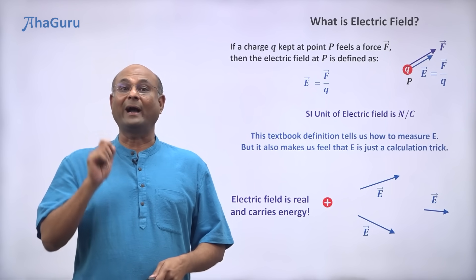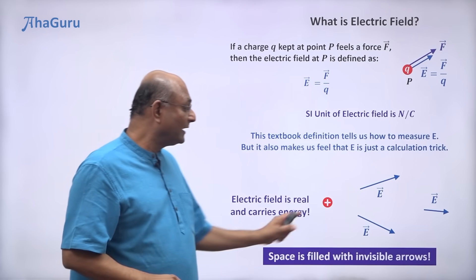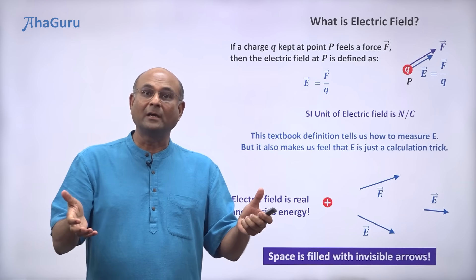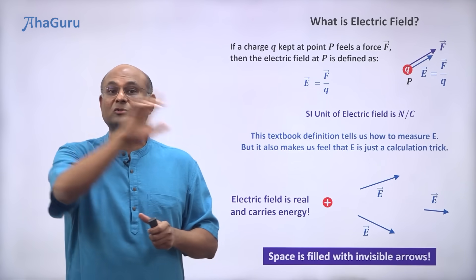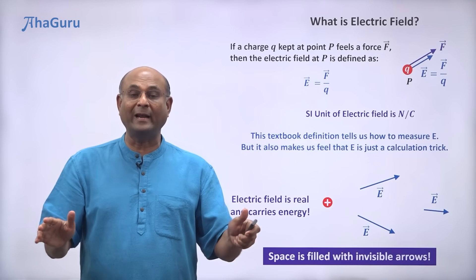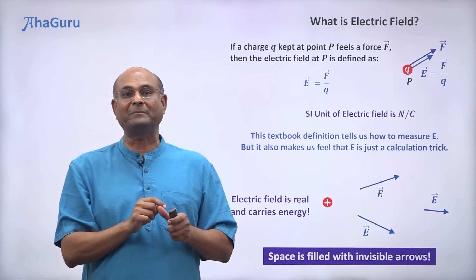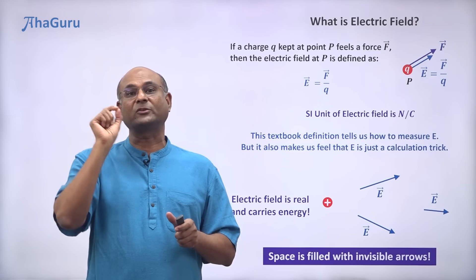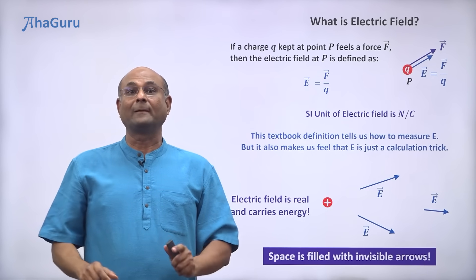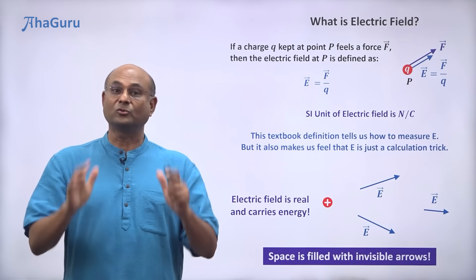The best way to understand electrostatics is to imagine space filled with invisible arrows. A charge configuration — a bunch of charges — is going to put invisible arrows all around space. These invisible arrows are what we call electric fields — they are real. Those arrows, in turn, act on other charges when you keep them there. That charge then feels a force, which is Q times the electric field vector. This two-step process is not just a convenient tool for calculation — it is the reality.